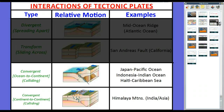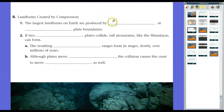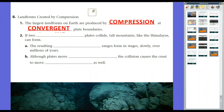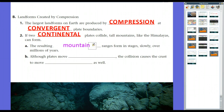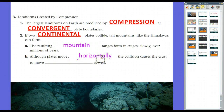Let's start with continent-to-continent and then go to ocean-to-continent. The largest landforms on Earth are produced by compression at convergent plate boundaries — convergent means come together, compression means squeezed together. If two continental plates collide, tall mountains like the Himalaya Mountains can form, and these resulting mountain ranges form in stages slowly over millions of years. Although these plates are actually moving along the horizontal plane, the collision will cause the crust to move vertically as well — that's why you get these mountains.